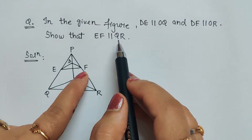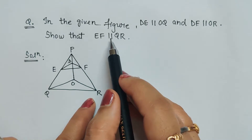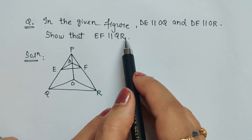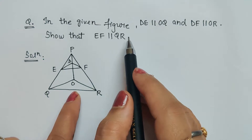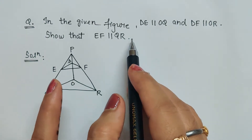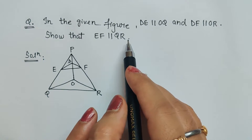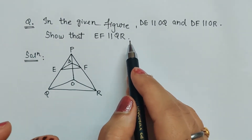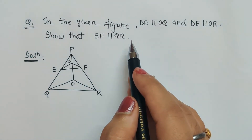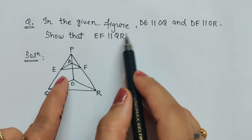We have to prove EF is parallel to QR. When we have to prove something is parallel to the other side of the triangle, we use the converse of basic proportionality theorem. When we have to prove that sides are divided in the same ratio, we use basic proportionality theorem.